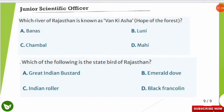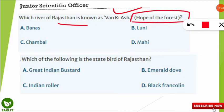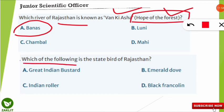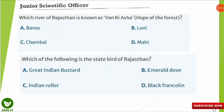These next questions are related to Rajasthan and its environment. The first question: which river of Rajasthan is known as Vankiyasha, meaning the 'hope of the forest'? The correct option is the Banas River. The next question: which of the following is the state bird of Rajasthan? This question also came in the UGC Net Environmental Science exam. The correct answer is the Great Indian Bustard, which is the state bird of Rajasthan. This was the video covering previous year questions for RSPCB and the Environmental Science entrance examination.